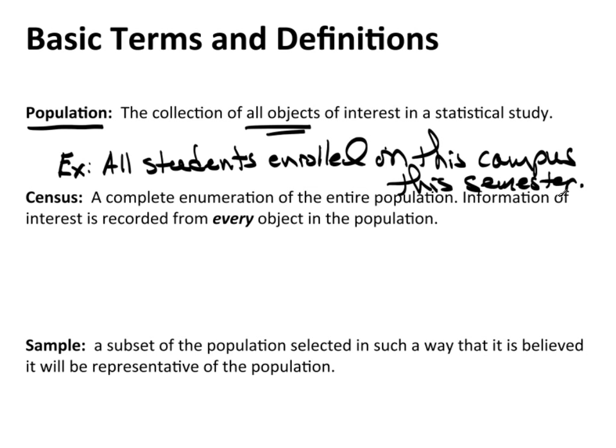Now a census. A census is a complete enumeration of the entire population. And then information of interest is recorded from every object in the population. So in this case, if we're dealing with this particular population, by enumeration what we mean there is we can identify every single element, in this case every single student, and then population. That's what it means to enumerate.